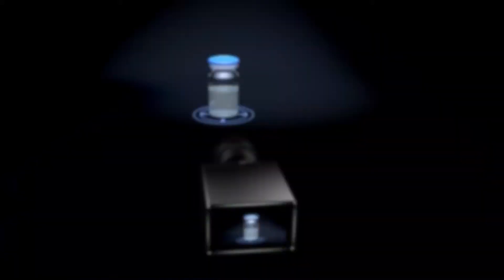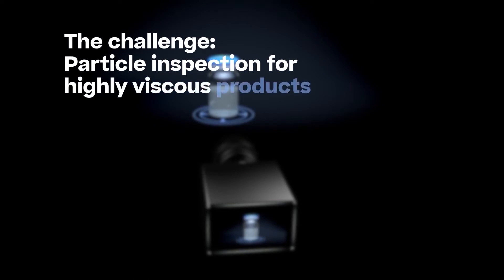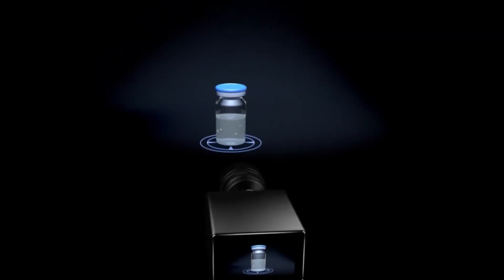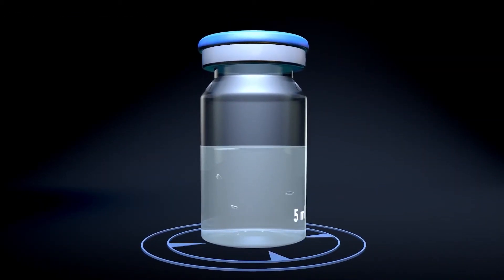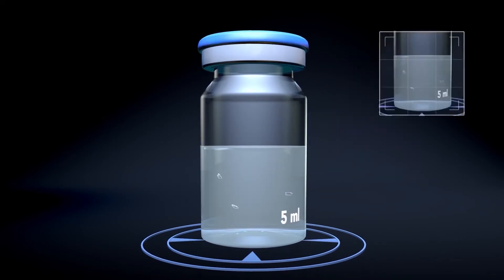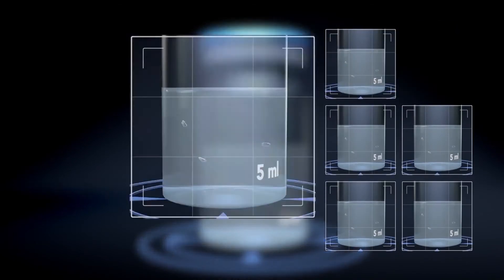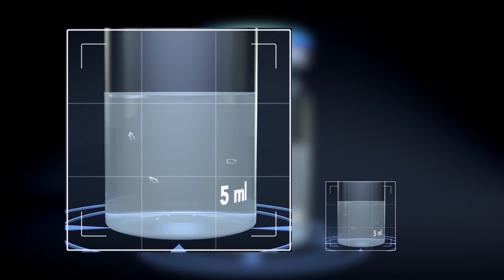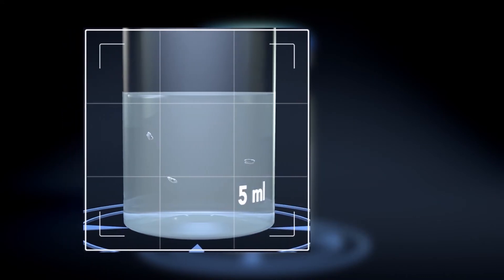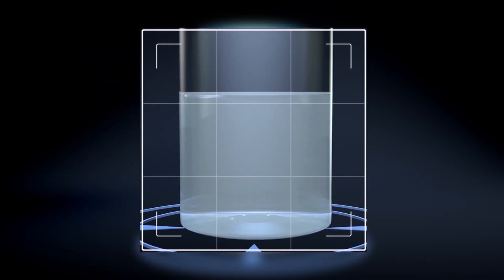The challenge: particle inspection for highly viscous products. When inspecting highly viscous products, the described inspection method produces no results since the contents of the container cannot be set in motion by rotation. Since there are no changes in particle position between the images, impurities inside the container cannot be differentiated from those on the outside.